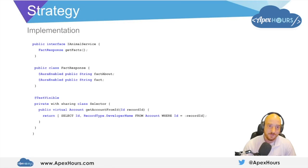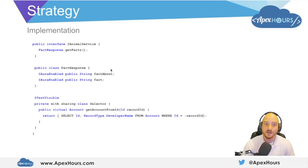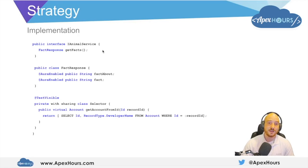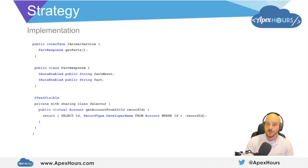Scrolling down in this class, we'll see that we have the animal service interface defined, which will return a fact response when we call get facts. The fact response will have a 'fact about' field — this could be dog or cat — and then what is the fact, for example that cats have retractable claws. We also have a selector implementation to get the record type developer name for the record we're looking at. What we care about is this interface — we're relying on it to tell us how we're going to get a fact response. We don't really care if we're going to get dog responses or cat responses; all we care about is that it will return a fact response back.